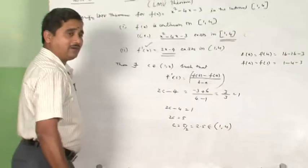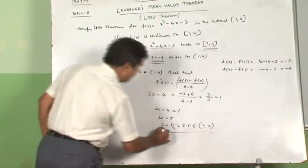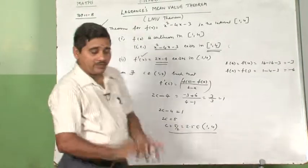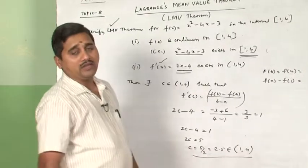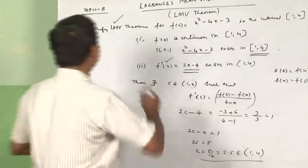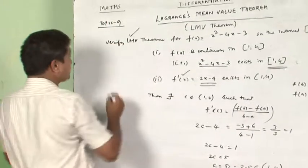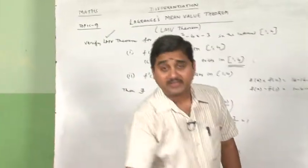That means we have verified LMV theorem. So dear children, what we have completed so far: about 9 topics from differentiation. And this topic is a very important topic and expected to be given for four marks question.